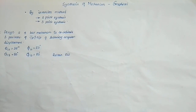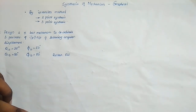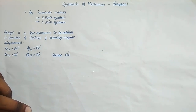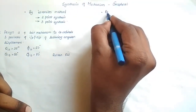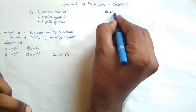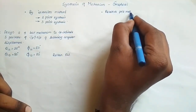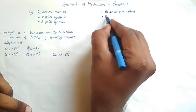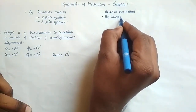Today we are going to discuss synthesis of mechanism using a graphical approach. For synthesis of mechanism, we have two different graphical methods: one is the relative pole method and the second one is the inversion method.